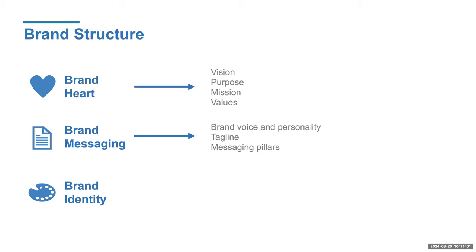Brand voice and personality, tagline, and messaging pillars. If you think about it, Jimmy John's has this casual, fun, approachable brand voice. But then you think of a bank — a financial institution. They're not going to be using the same phrasing. They're a little more buttoned up and formal — maybe their message is 'we're here to help you on your financial journey.' Their brand voice is more confident, firm, helpful, approachable, but professional. So brand voice and personality are really shaped by who you are and who you serve.